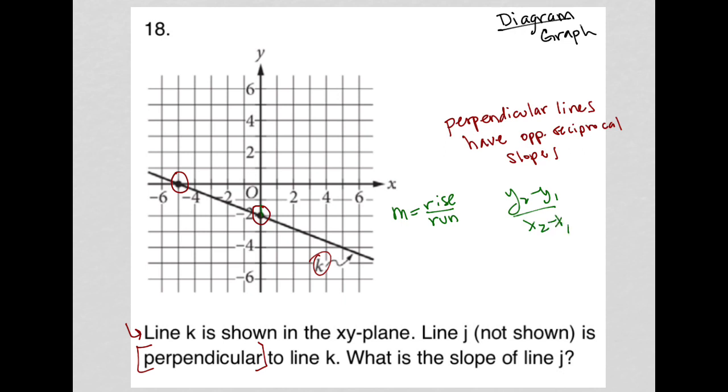I need to rise 2 units, so I'm up 2, that's my rise. And then I'm going to run to the left 5 units, so that's negative, that's my run. So my slope for line k is negative 2 fifths, which means my slope for line, I'll call that mk, slope for line k.